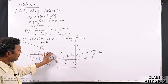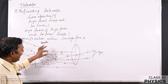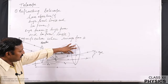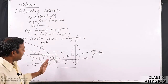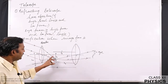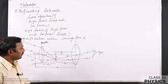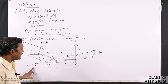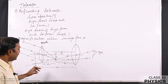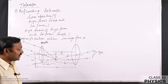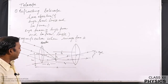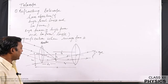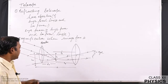This image formed by the objective acts as an object for the eyepiece. If it falls between the focus and the pole of the eyepiece, then the final image will be formed at the distance of distinct vision, which is virtual. In this way, an enlarged image of the celestial object can be seen. Now let us find the magnification produced by this telescope when the image forms at the distance of distinct vision.